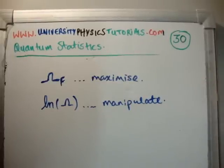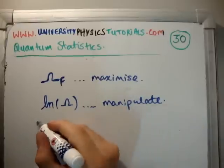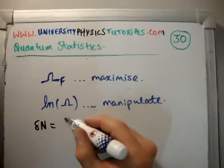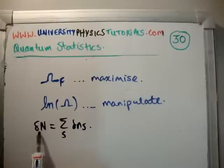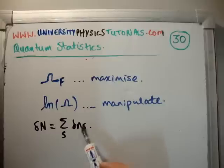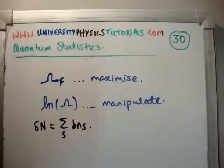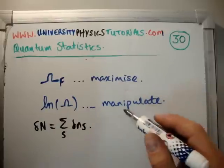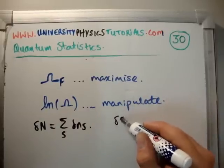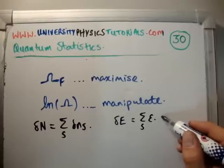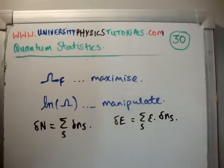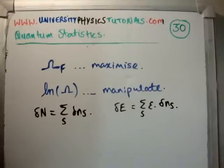We're maximizing it subject to two constraints. The first constraint is that the number of particles does not change: the total number of particles is the sum of the number of particles in each macro box, delta n sub s. The second constraint is on the energy: delta E is equal to the sum over s of epsilon times delta n sub s. So the energy also does not change. Those are our two constraints.